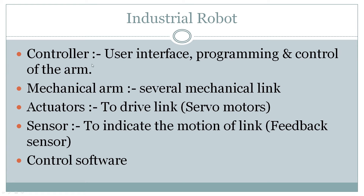The major components are the controller and mechanical arm, but other components are also there: actuator, sensor, and control system. The controller handles user interface, programming and control of the arm. The actuator is the servo motor that drives the links. Sensors indicate the motion of each link — exactly how much motion we are getting from the feedback sensor. And the control software controls the actuator, sensor and mechanical arm together.